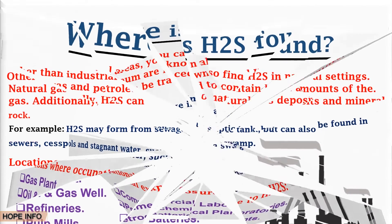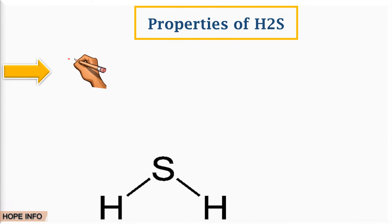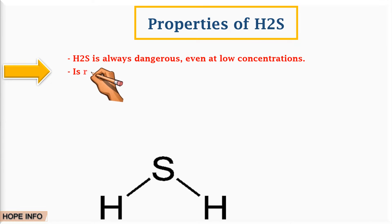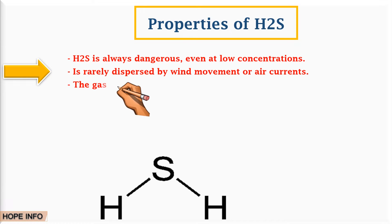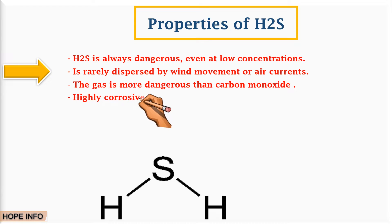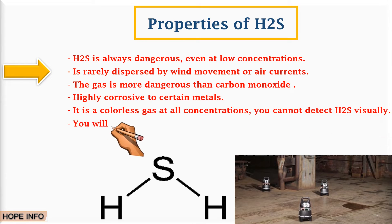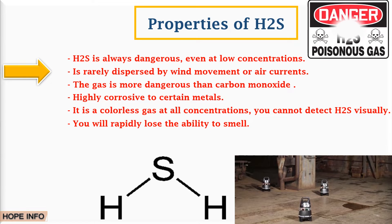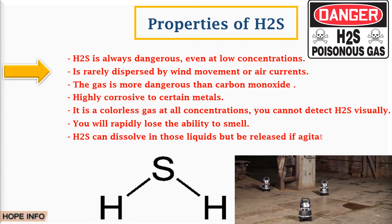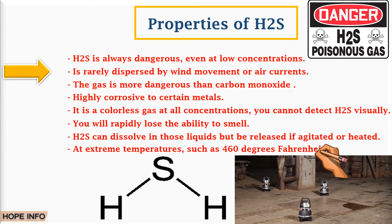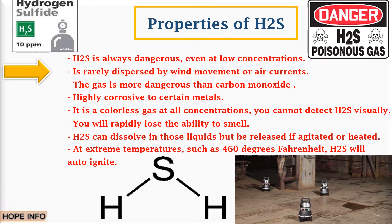What are the properties of H2S? Beyond simply being colorless and having a rotten egg smell, H2S is always dangerous even at low concentrations. While it tends to settle in low areas, the gas is heavier than air and disperses by wind movement or air currents. The gas is more dangerous than carbon monoxide and is highly corrosive to certain metals. Since it is colorless at all concentrations, you cannot detect H2S visually. You also cannot rely on your sense of smell, because at high H2S concentrations you will rapidly lose the ability to smell. You should also be aware that H2S can dissolve in water and oil but may be released if agitated or heated.